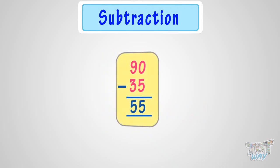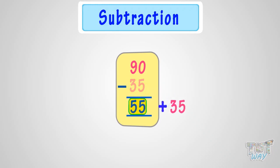Let's take another example: 90 minus 35 is 55. We have to check whether this is correct or not. Add the subtrahend to the difference — we get 90, and 90 is our minuend. So our answer is correct.